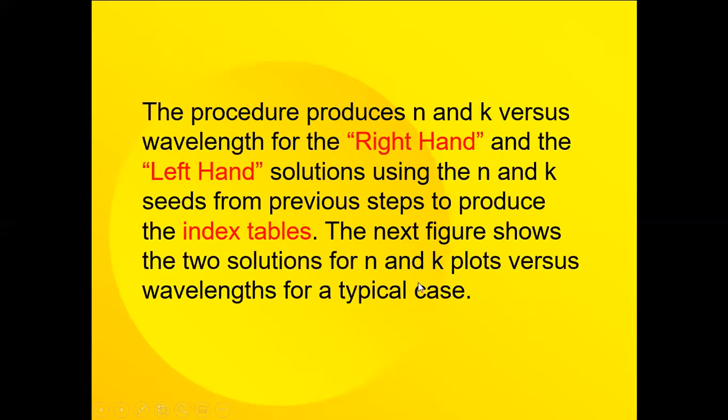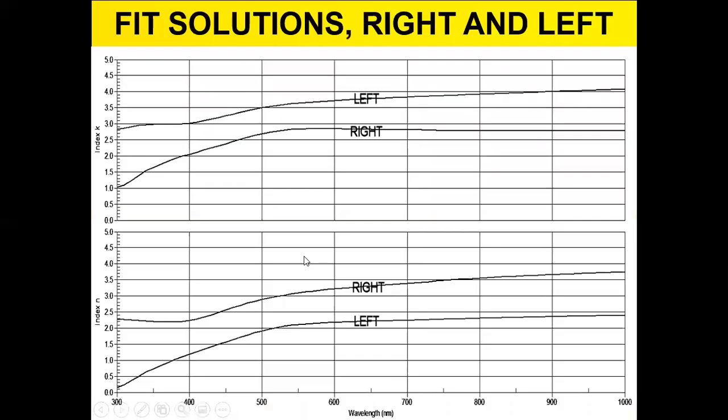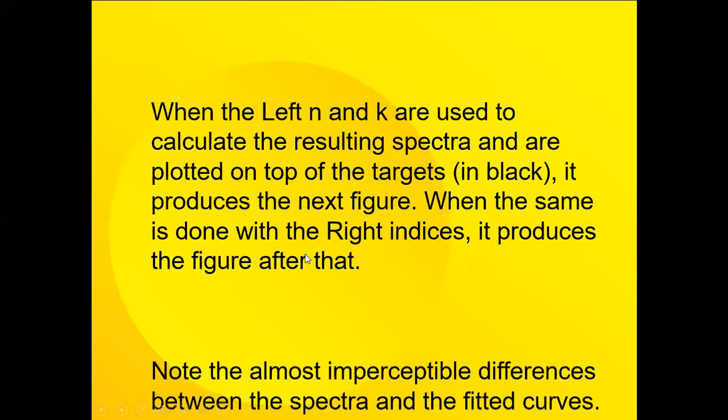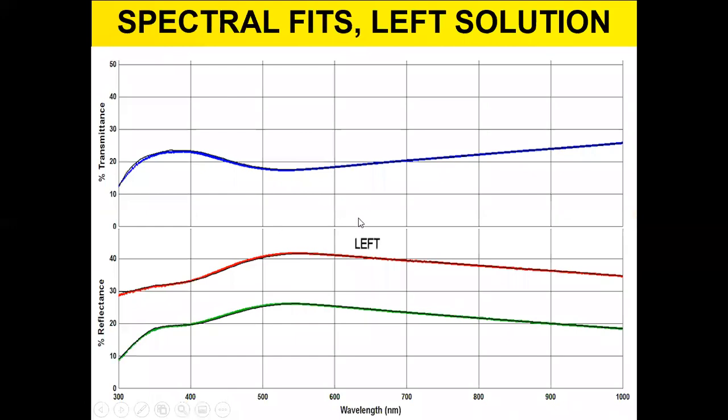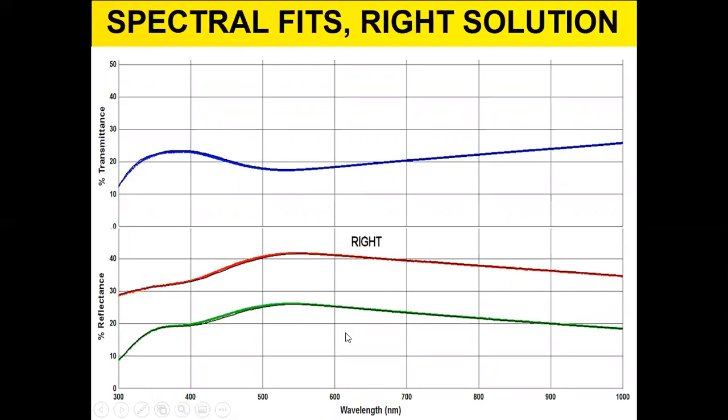And then we can use this N and K data to plot our left and right hand curves, which show us the N and K values which fit the spectral curves that we measured. So here's the two solutions. When I plot those, here's the left hand solutions. You'll notice the colored curves are the measured values, and the black curves are the fitting. So the fitting is quite good here for the left solutions and the right solutions. Either one looks identical, and the fits are quite good, almost identical.